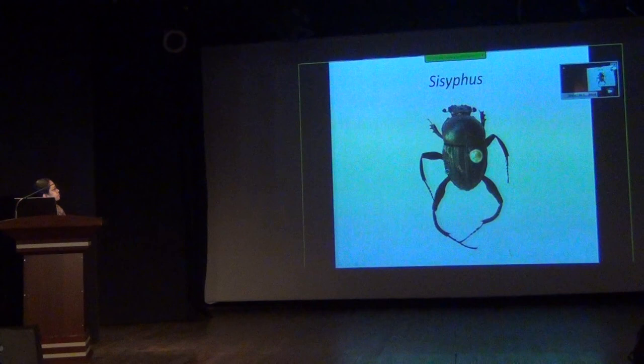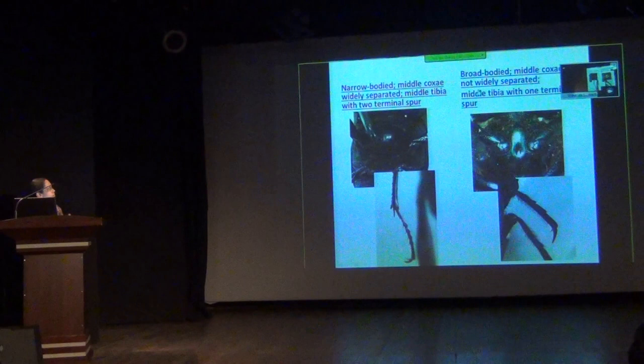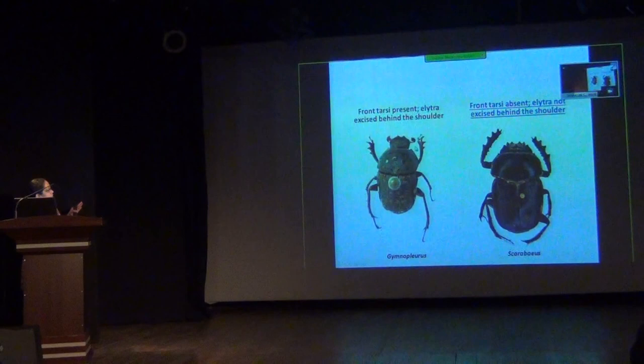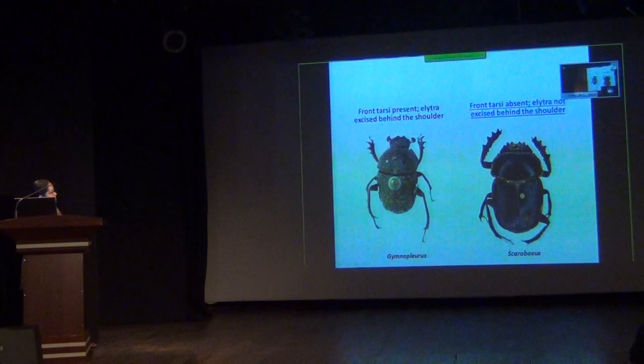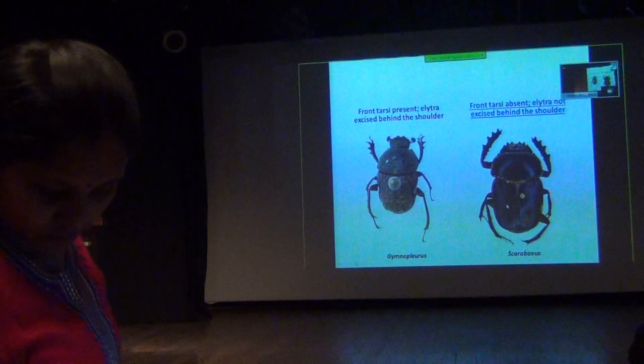If it is broad-bodied and the middle coxae are not widely separated, and the middle tibia has only a single spur, and the front tibia has one terminal spur — then if the front tarsi are present and the elytra is excised behind the shoulder so the abdomen is visible below, it is genus Gymnopleurus. If the front tarsi are absent and the elytra is not excised, then it is Kheper.